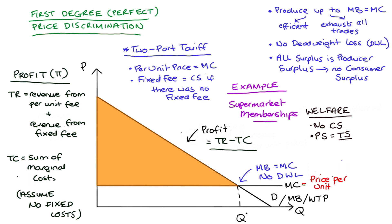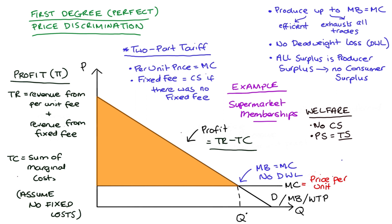Before we get onto the third way of perfectly price discriminating, I should say that this model really only works when we're thinking about individual demand curves. If we had a market demand curve, I couldn't just grab the area below demand above the price and set it as a fixed fee, because our demand curve would include the willingness to pay for a lot of different people. You can get more fancy examples in the literature — for instance, if we assume the market is full of homogenous people, but that's pretty advanced and I won't cover it here.